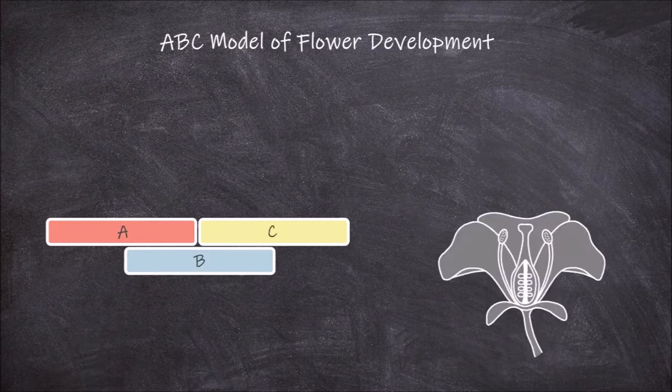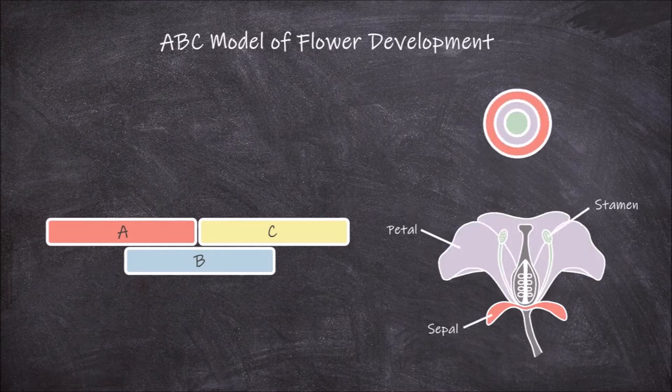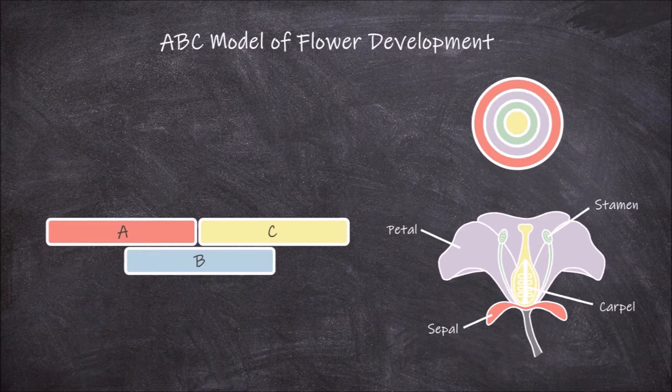Flowers consist of four whorls of floral organs that develop in rings that flank the meristem. The first to develop is the sepal whorl, followed by the petal whorl, then the stamen whorl, ending with the carpal whorl that stays the central whorl. This model of flower development has been studied in the model plant species Arabidopsis thaliana.